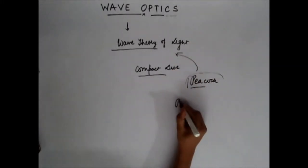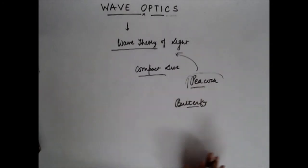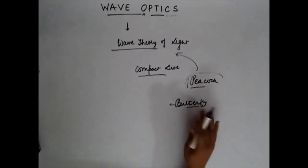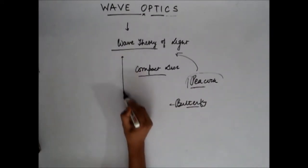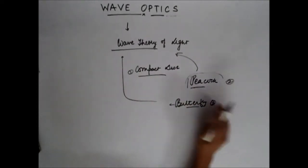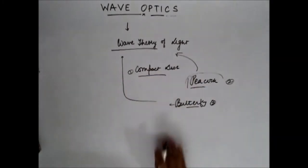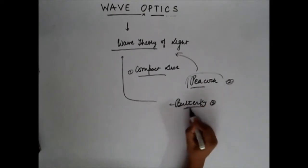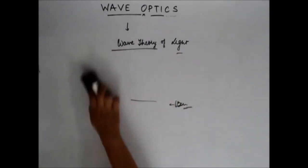But it actually is a very beautiful example of wave theory of light. Another example could be a butterfly — a butterfly looks very beautiful. The different colors on the wings of a butterfly can also be explained with the help of wave theory of light. So there are three examples which can be explained with wave theory of light, and these are good enough to raise your interest in this topic. Now let's begin.